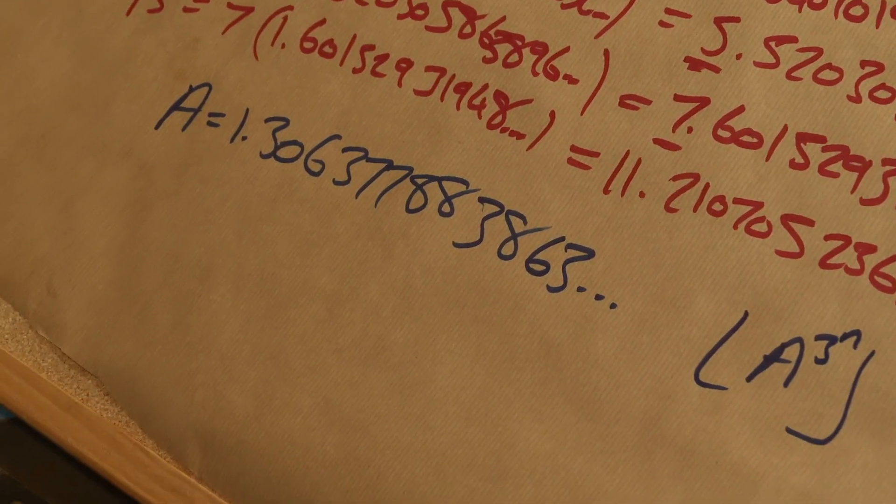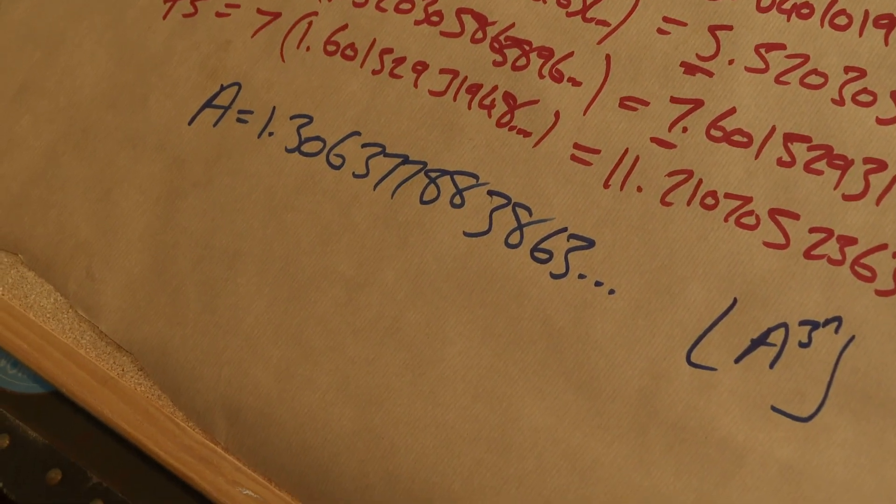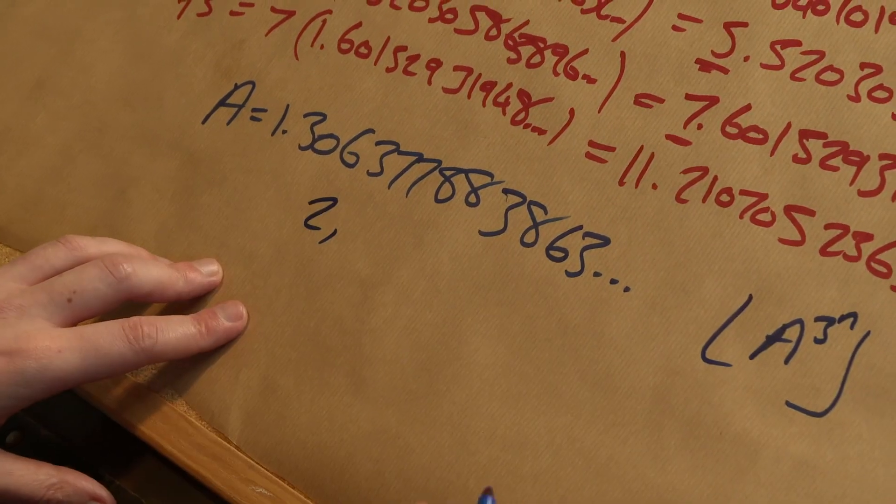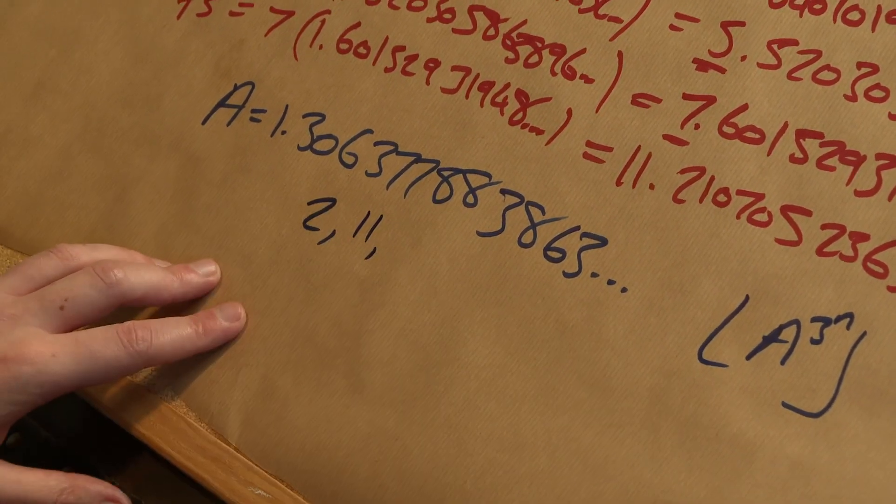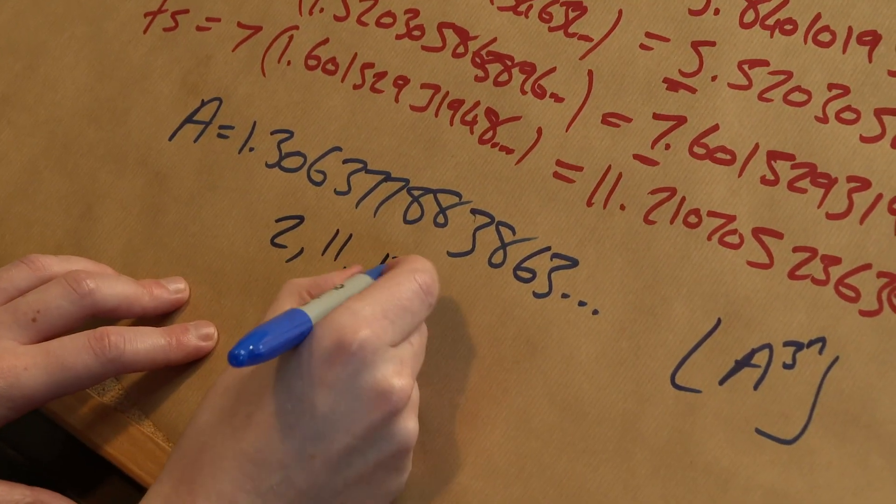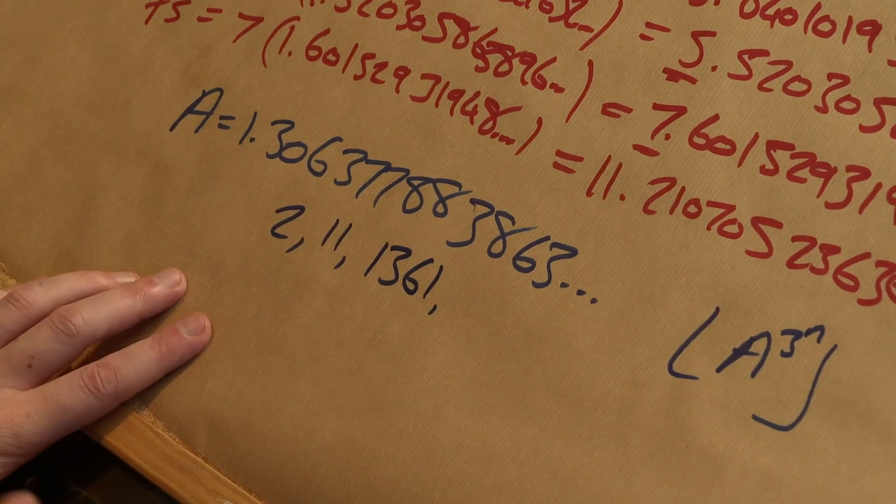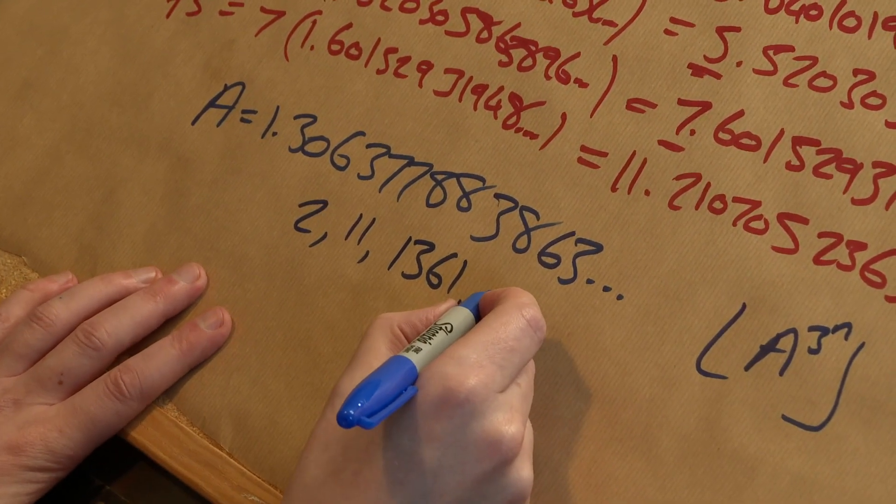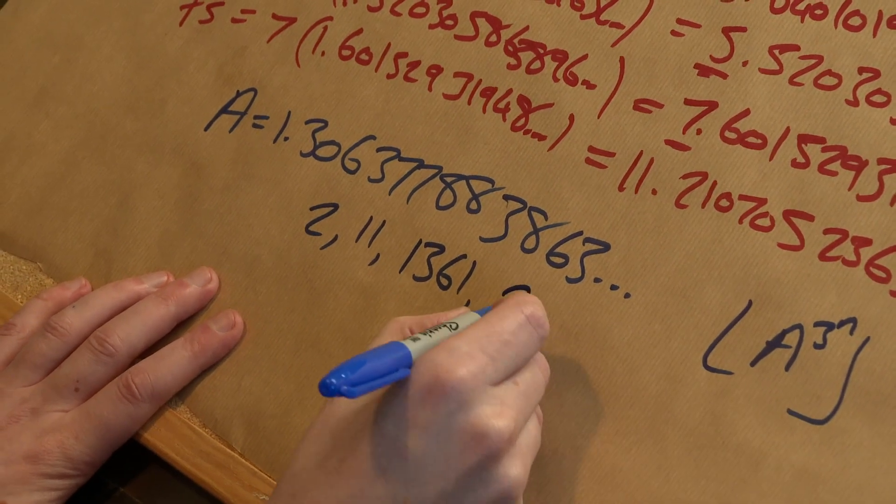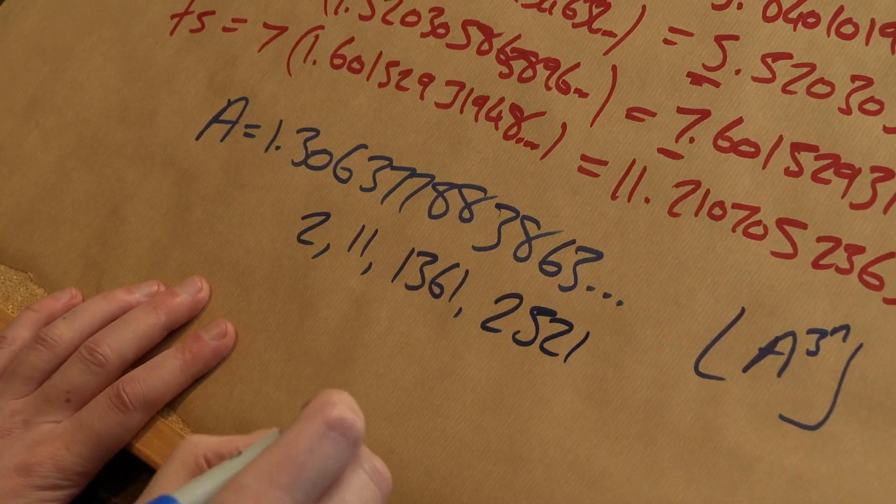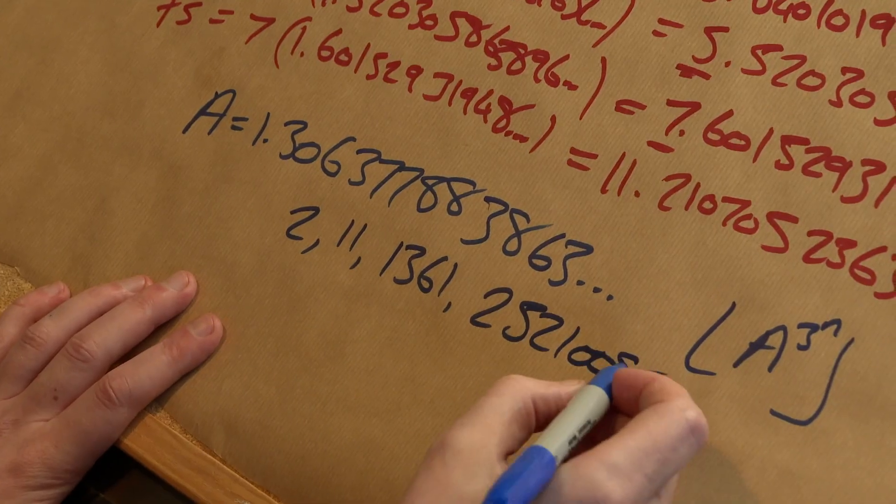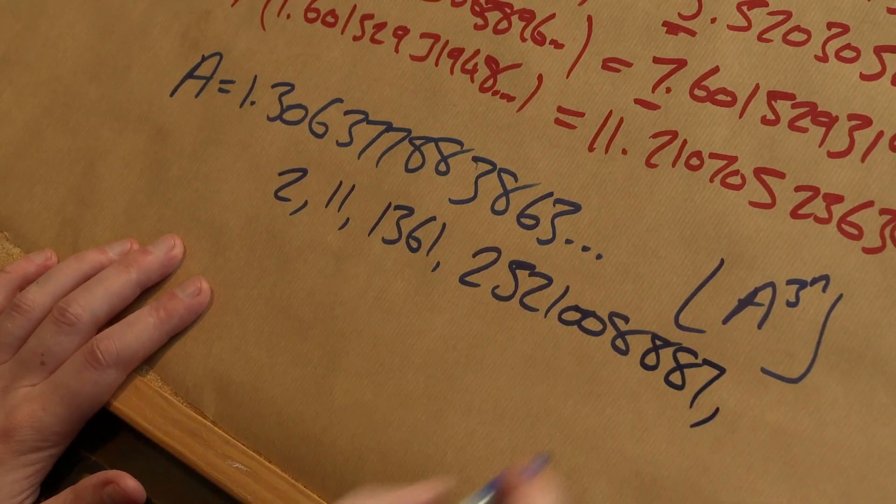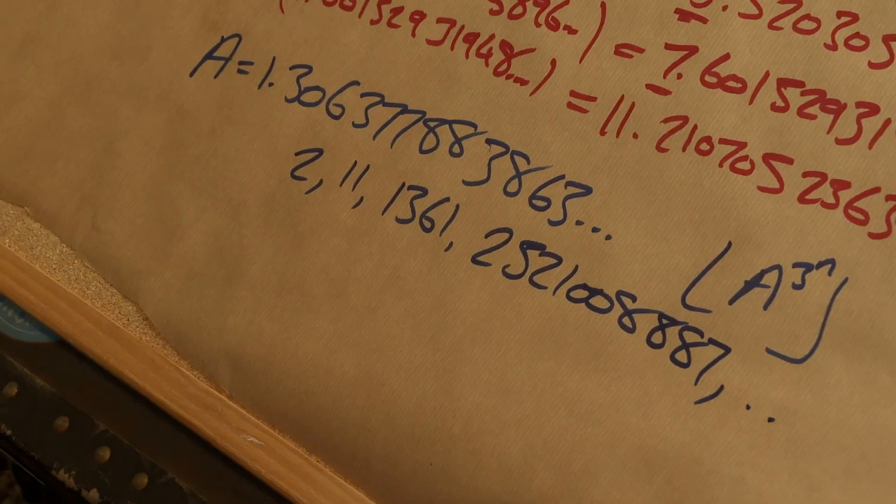I'll show you what they are. So the first prime you got for doing this was a two, then the next one was eleven, then the next one was one thousand three hundred and sixty-one, and the next one was, oh, it was a big number, it was two billion five hundred and twenty-one million eight thousand eight hundred and eighty-seven. And then the next one was huge, really, really big. And so it's generating a sequence of primes, although there are gaps.